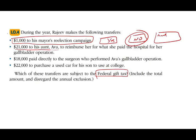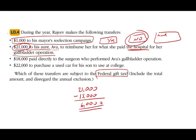Let's look at number two: $21,000 to his aunt Ava to reimburse her for what she paid the hospital for her gallbladder operation. They can give you a statement like this, or they can give you a hospital bill for $21,000 and a check paid to aunt Ava. Is this subject to the gift tax? The answer is yes. Because Rajiv paid his aunt directly — he paid her $21,000 — he can exclude $15,000 for the annual exclusion, and what's left subject to the gift tax is $6,000, which he must add to his total lifetime gift tax.